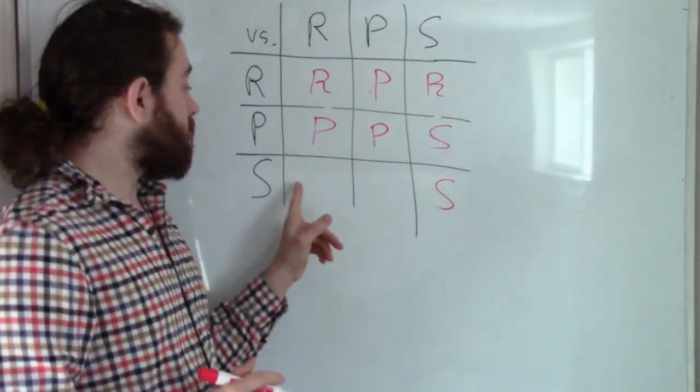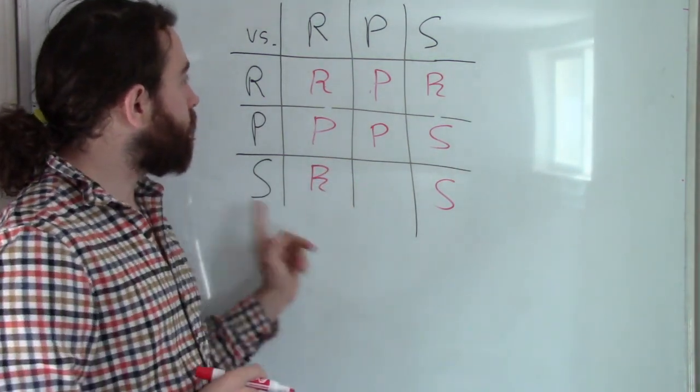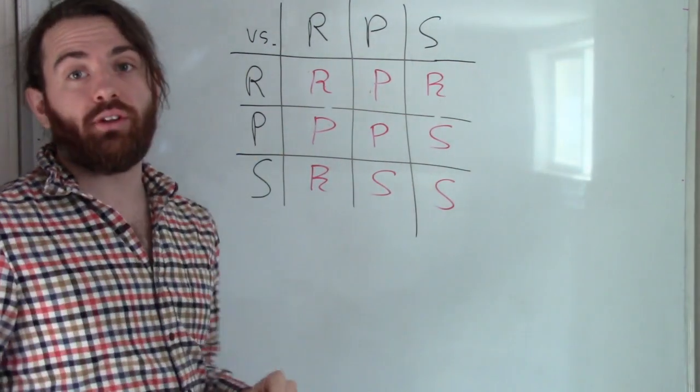And then finally at the bottom we have scissors versus rock, which we know rock breaks the scissors, scissors versus paper, scissors cuts the paper. And now we have our table all filled out.